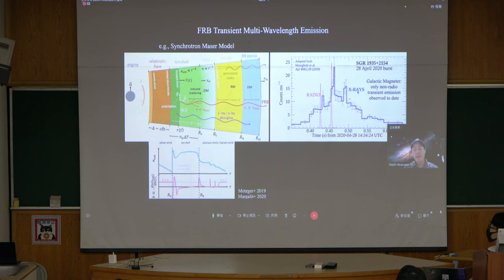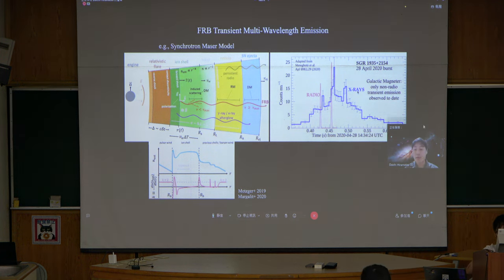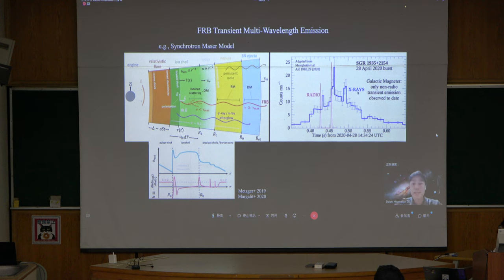For the case of galactic SGR, we've seen simultaneous radio and x-ray observations. These are really beautiful results, and this remains the only non-radio transient emission to date. This is not being possible for extragalactic FRBs, given the current sensitivity of x-ray satellites.